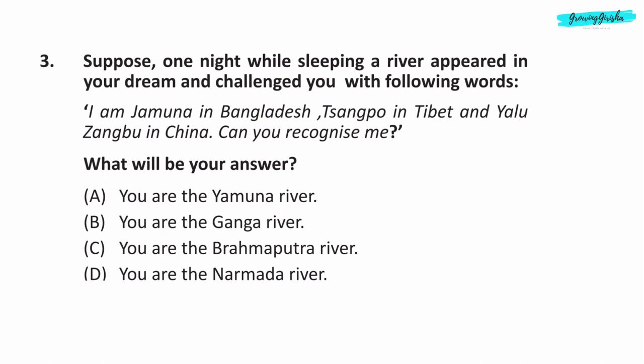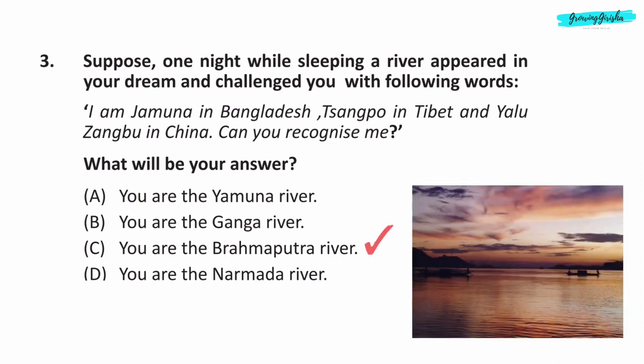Question 3. Suppose one night while sleeping, a river appeared in your dream and challenged you with the following words: I am Jamuna in Bangladesh, Sangpo in Tibet, and Yalu Zangbu in China. Can you recognize me? What will be your answer? Option C — you are the Brahmaputra River.